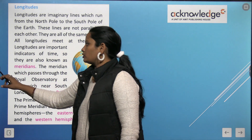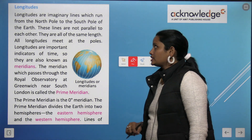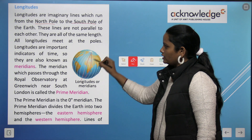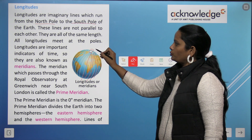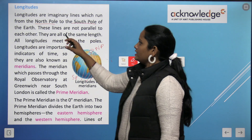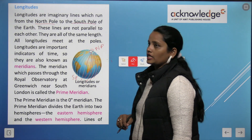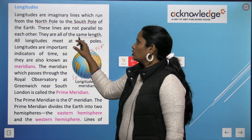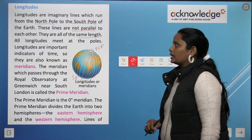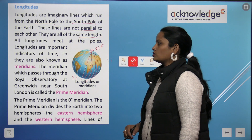Now let's learn about longitudes. Longitudes are imaginary lines which run from the north pole to the south pole. These long lines shown on the earth are known as longitudes. These lines are not parallel to each other — they are all of the same length and they meet at the poles. Longitudes are important indicators of time, so they are also known as meridians.